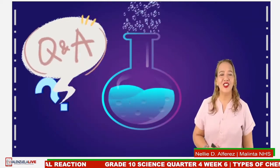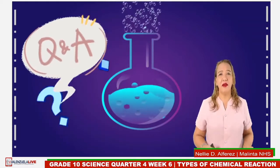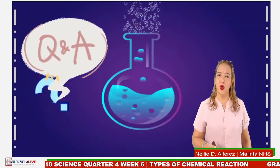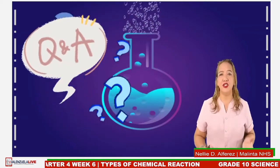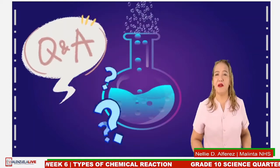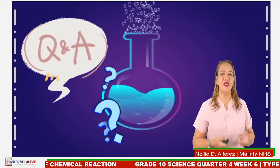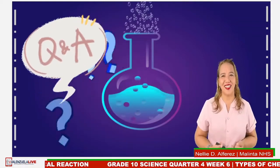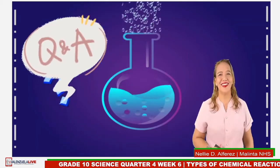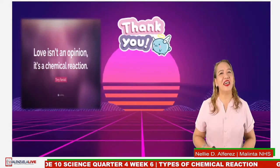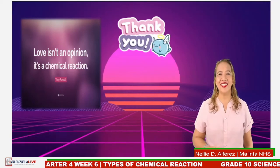The last question is: how is energy transferred in a chemical reaction? When a chemical reaction occurs, energy is transferred to or from the surroundings. For example, when a bonfire burns, it transfers energy to the surroundings, and objects near it become warm. For questions not addressed today, your science teacher will help during follow-up discussions. I'd like to share this quote by Tony Randall: 'Love isn't an opinion, it's a chemical reaction.' Thank you and God bless everyone. Bye!